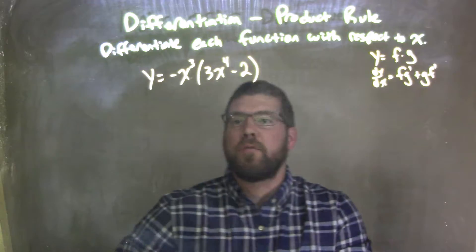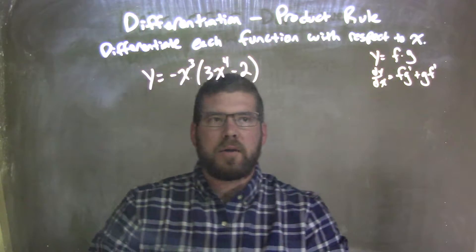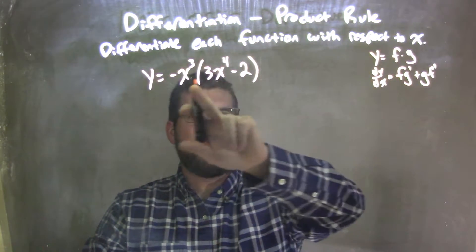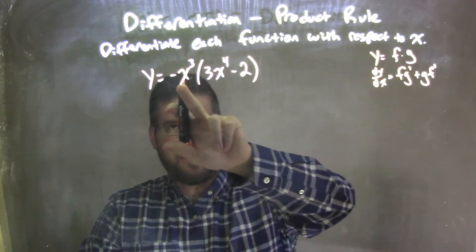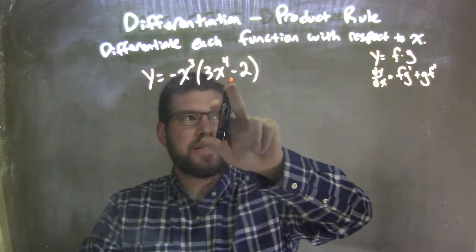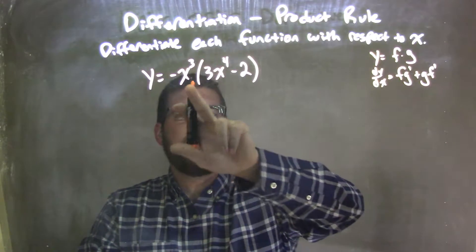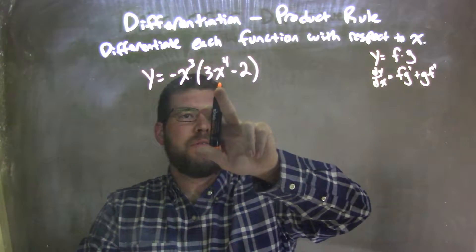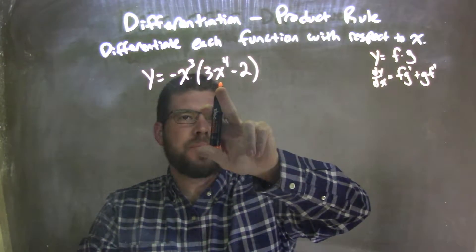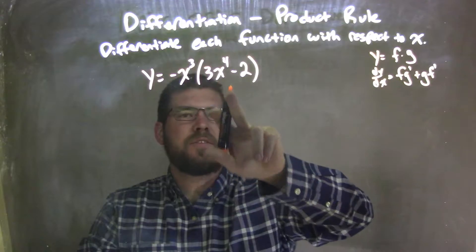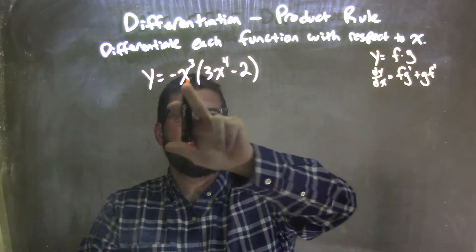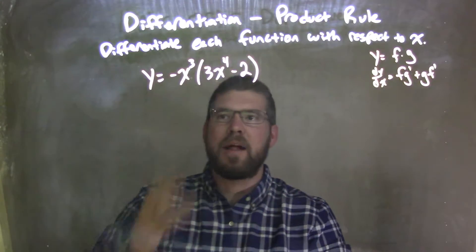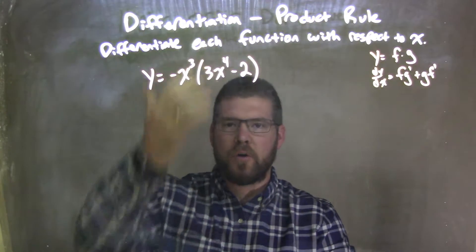Well, if I want to apply the product rule, we have a little rule right here. I have my two functions here, my first one and my second one. We're going to take the first one times the derivative of the second one, plus the second one times the derivative of the first one. And that's our rule here.